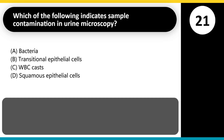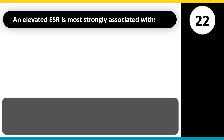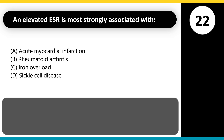Which of the following indicates sample contamination in urine microscopy? A. Bacteria. B. Transitional epithelial cells. C. WBC casts. D. Squamous epithelial cells. Answer: D. Squamous cells are from external genital skin and often indicate improper urine collection.